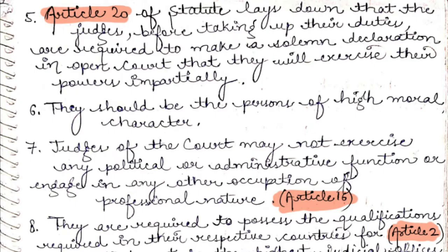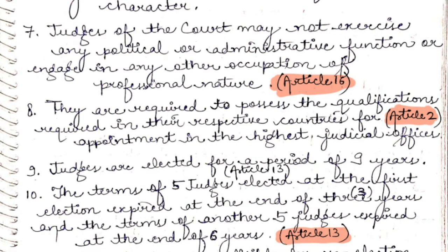Point 7: judges of the court may not exercise any political or administrative function, or engage in any other occupation of a professional nature. Article 16 of the statute says that once elected as a judge of ICJ, they will not hold any political, administrative, or professional occupation.